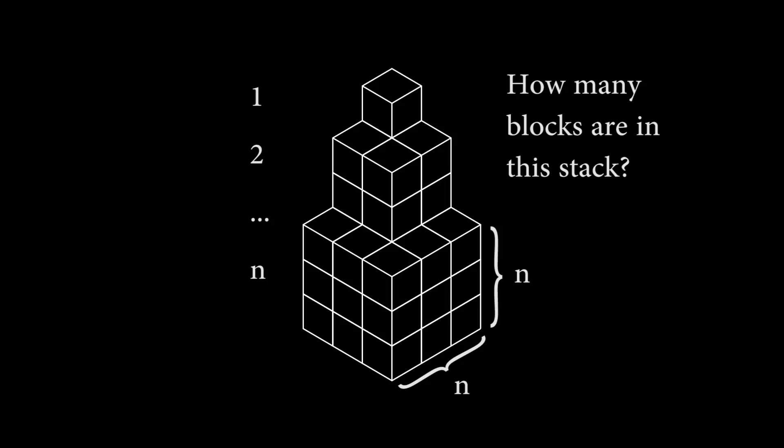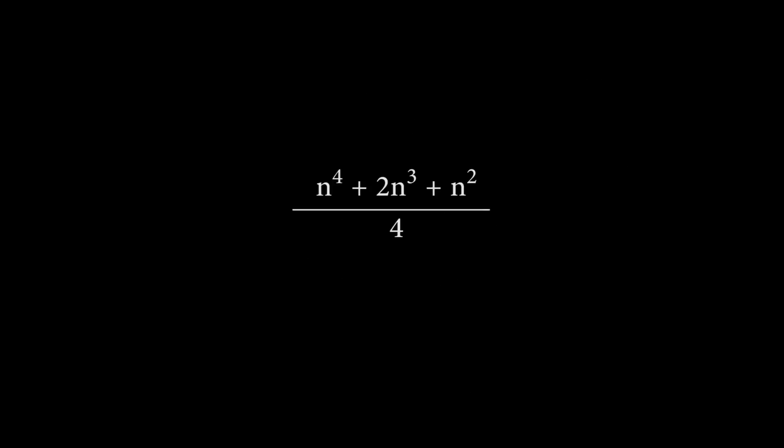Then to answer our original question, the total area of a stack of the first n cubes will be the nth triangle number squared, which comes out to be n to the fourth plus 2n cubed plus n squared over 4.